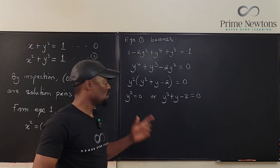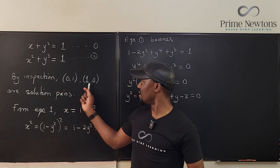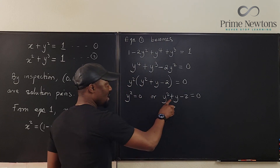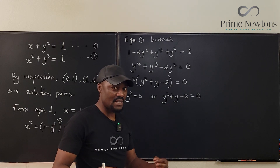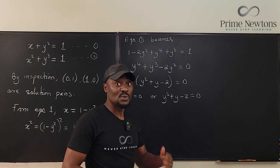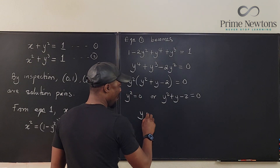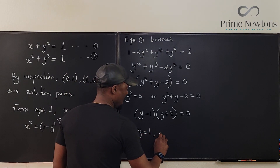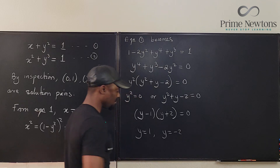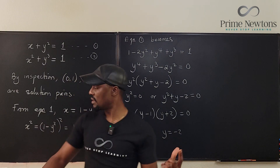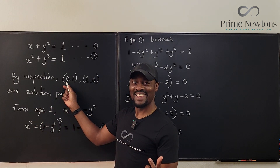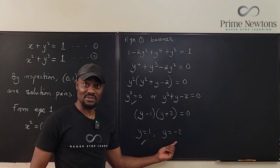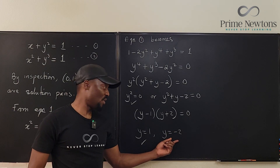From the factored form, y squared equals zero, giving y equals zero — a solution we already found by guessing. We just need to focus on y squared plus y minus two equals zero. What two numbers multiply to give minus two and add to one? That's two and minus one. So this factors into (y minus one)(y plus two) equals zero, meaning y equals one or y equals negative two.